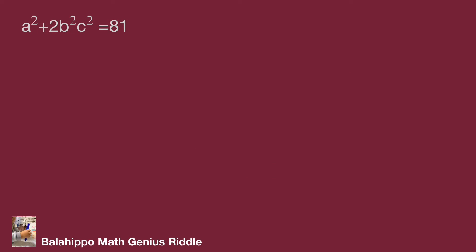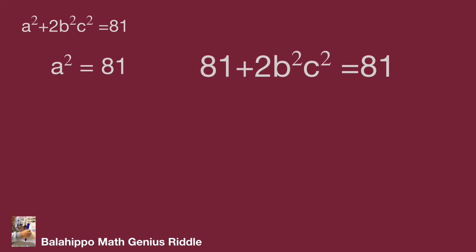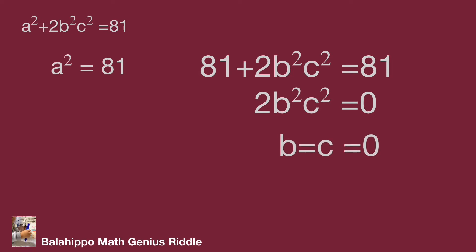Back to the given equation: a squared plus 2 times b squared c squared equals 81. If a squared equals 81, substituting gives 2 times b squared c squared equal to 0, so b equals c equals 0. But the constraint is a not equal to b not equal to c, so this answer is false.